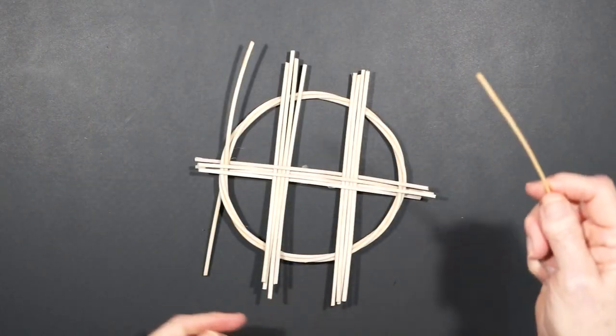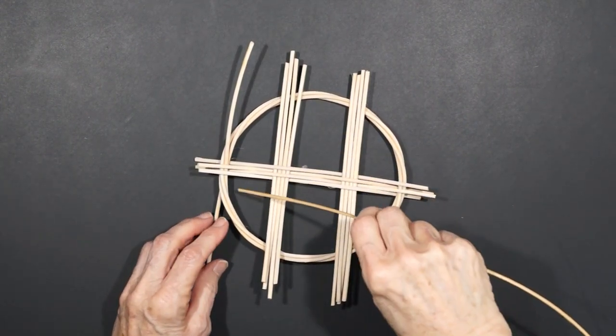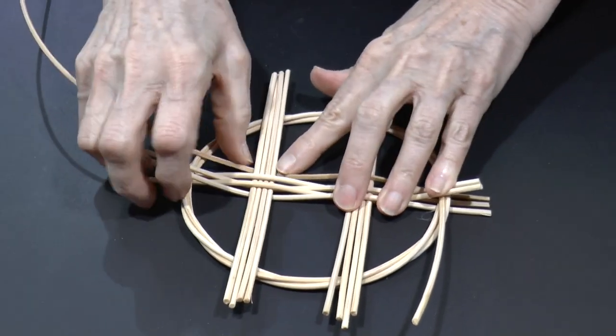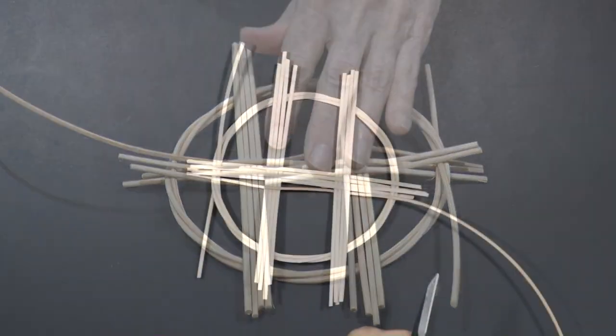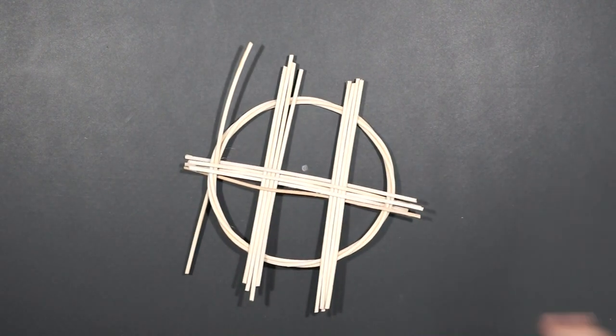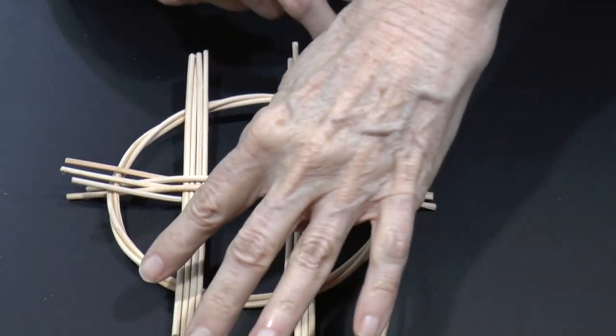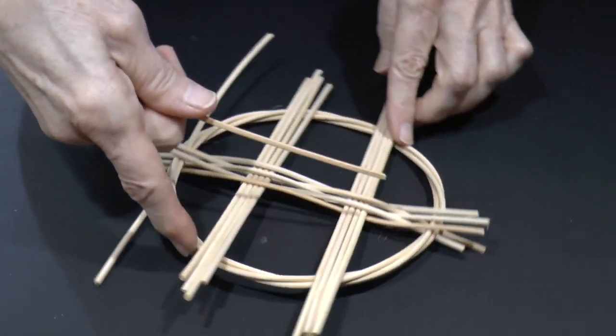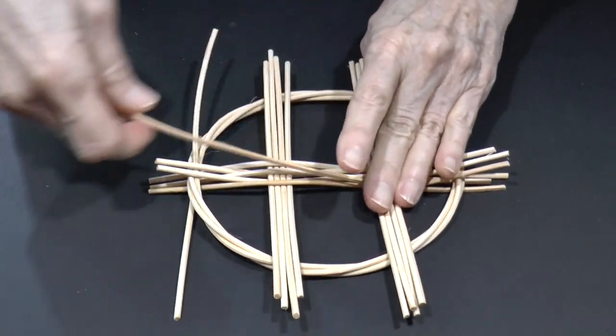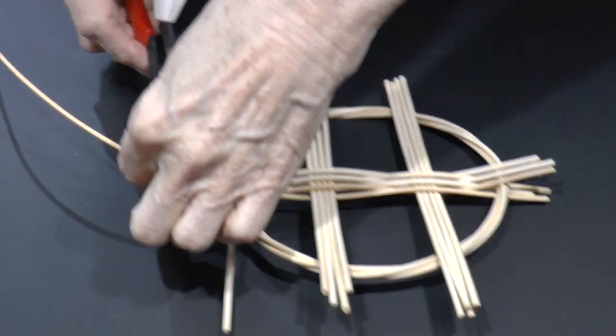Once ready, we'll do as we have been, first weaving one end in place under the ring, and then over, under, over. And cut. I like to keep my reed in my right hand, so I turn the trivet 180 degrees. The last row started over the ring, so we'll start this one under. Then we go over the spoke, under the second, and over the outer ring. And cut.